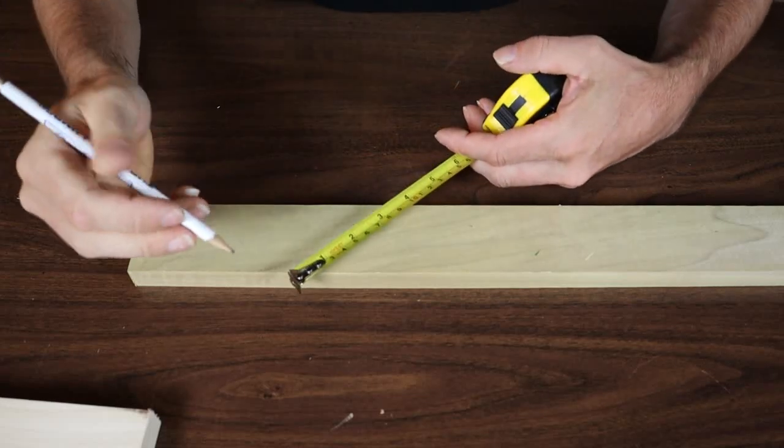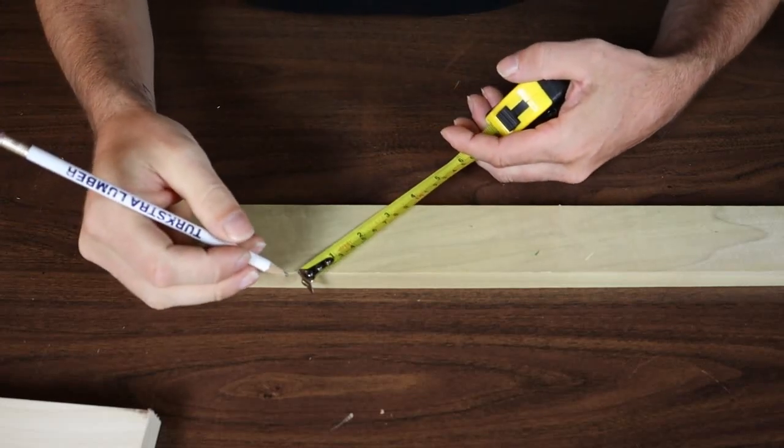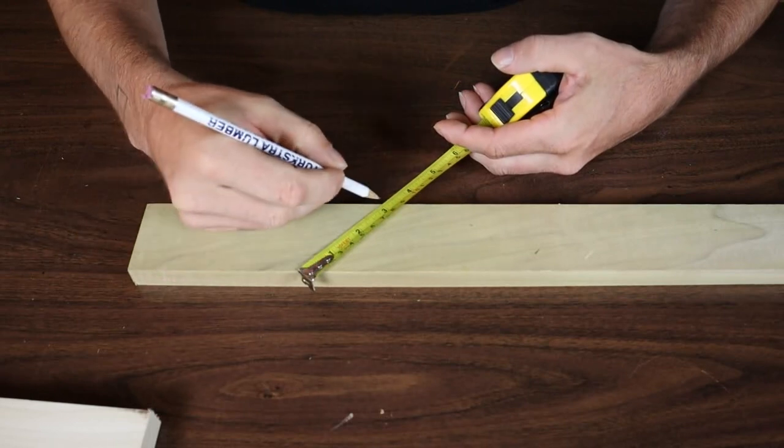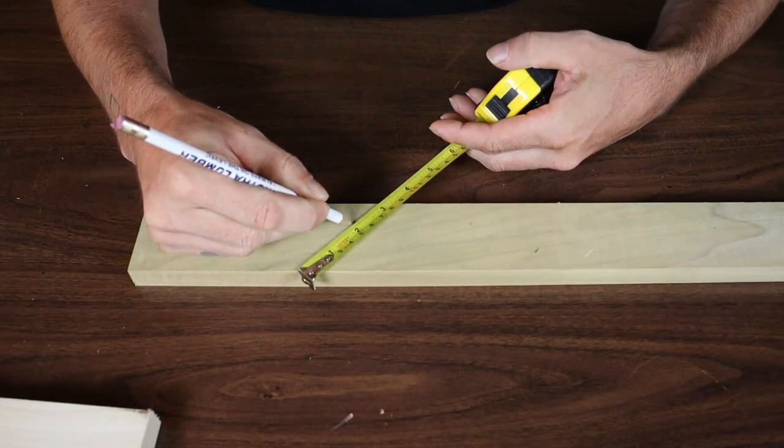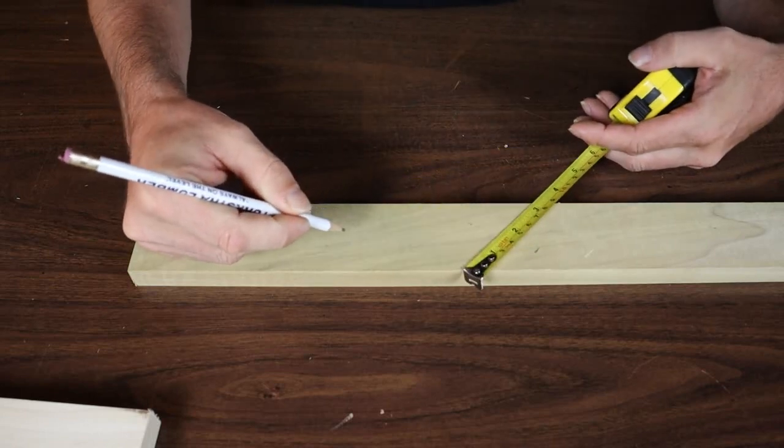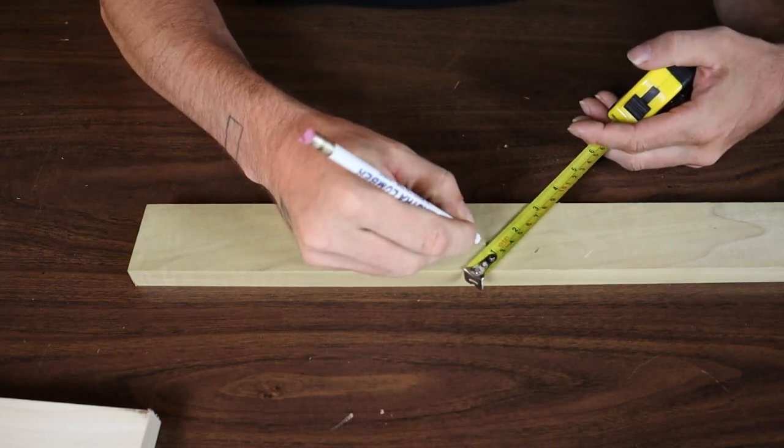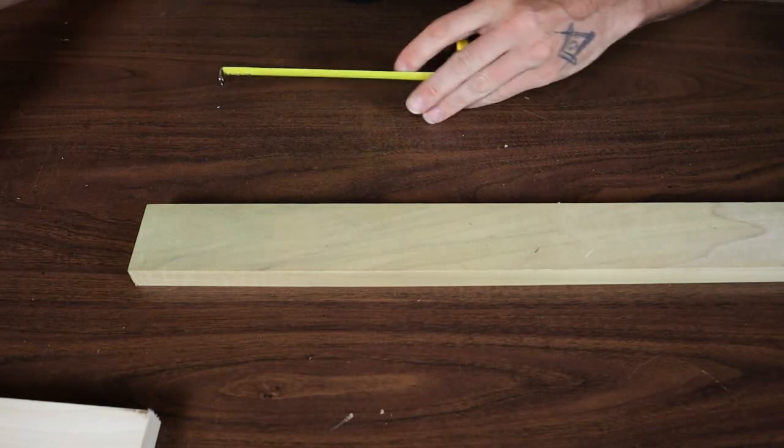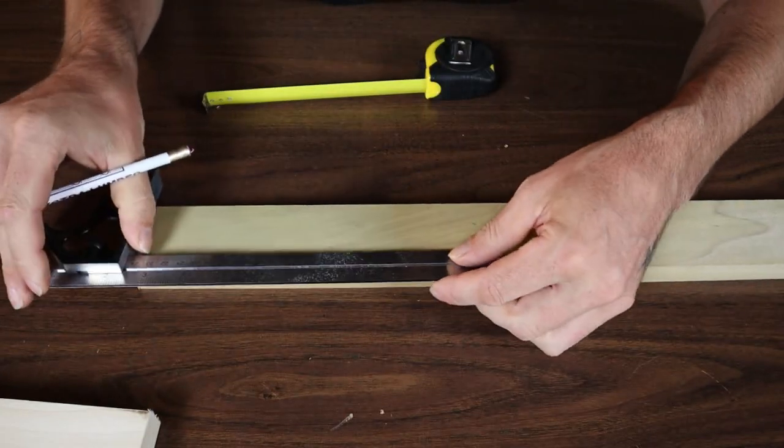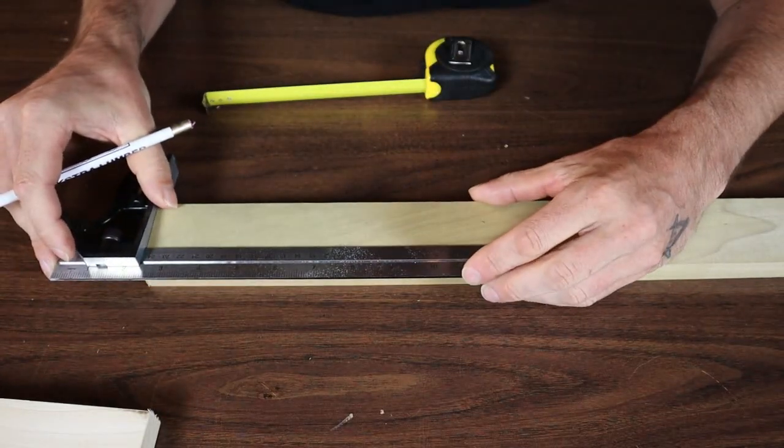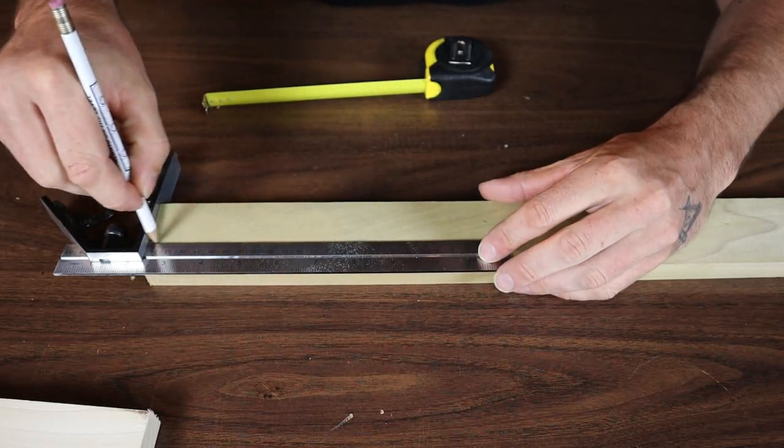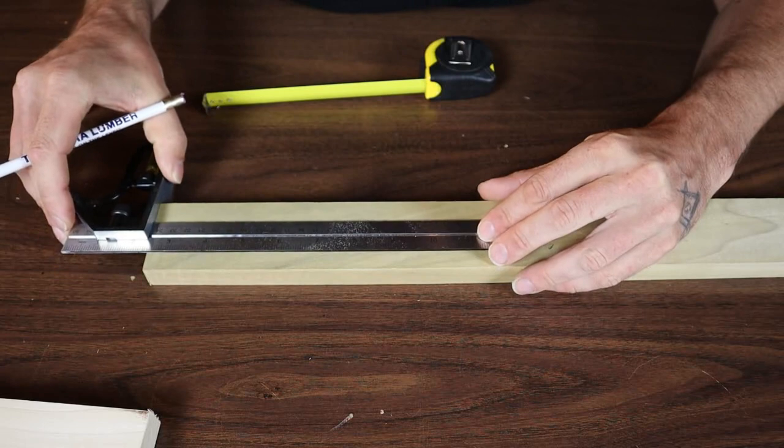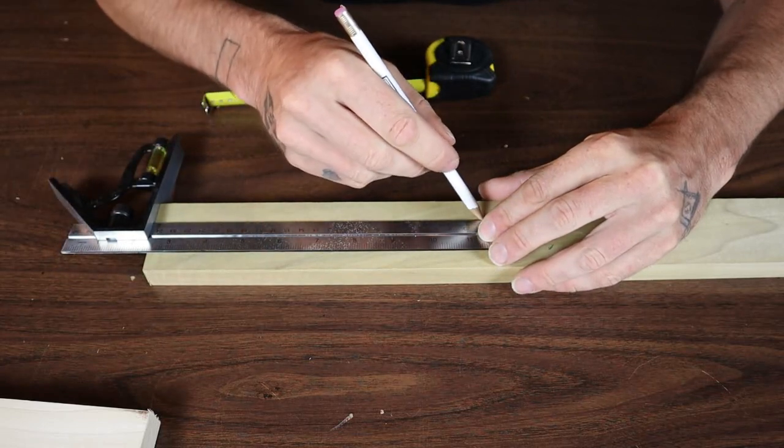The same thing if I wanted to divide this narrow board into three equal parts. So I can go from one, angle the tape over to three, mark it at one and two, do that further down the board at one and two. Then I can grab my straight edge, whichever it is I'm going to use, and draw my lines. And you'll see that it divides the board up perfectly.